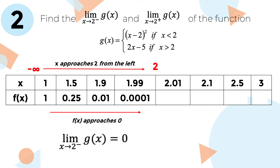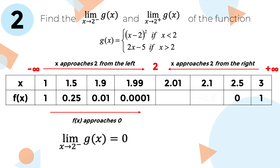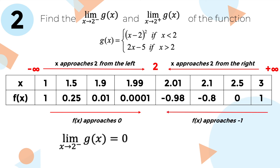To compute for the right-hand limit of the function, we assign x values which are greater than 2 — these numbers are 2.01, 2.1, 2.5, and 3. Evaluating the function using these values, we can say that f(x) approaches negative 1. Therefore, the right-hand limit of the function is negative 1.